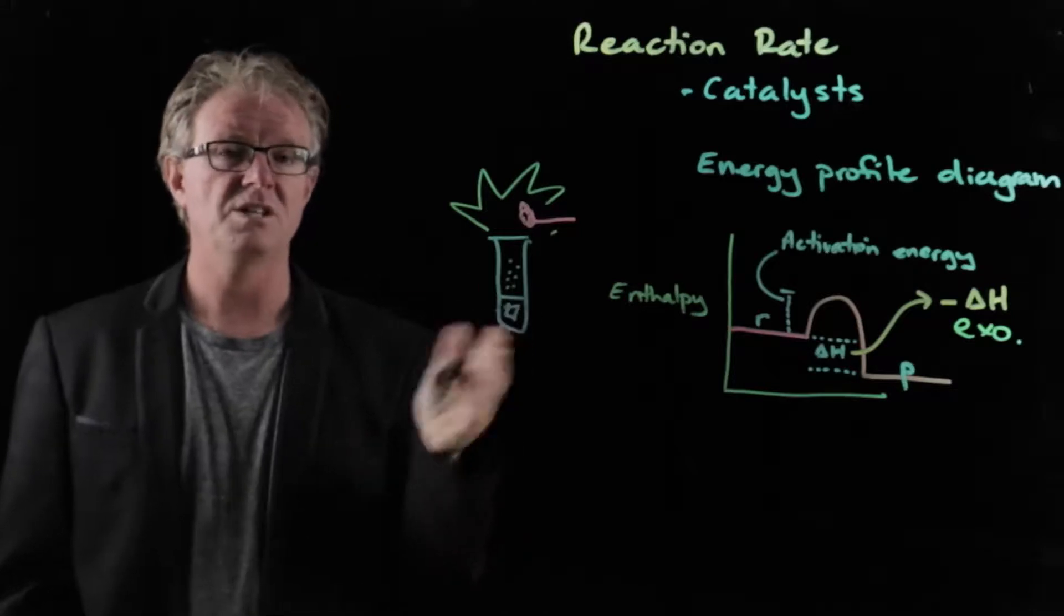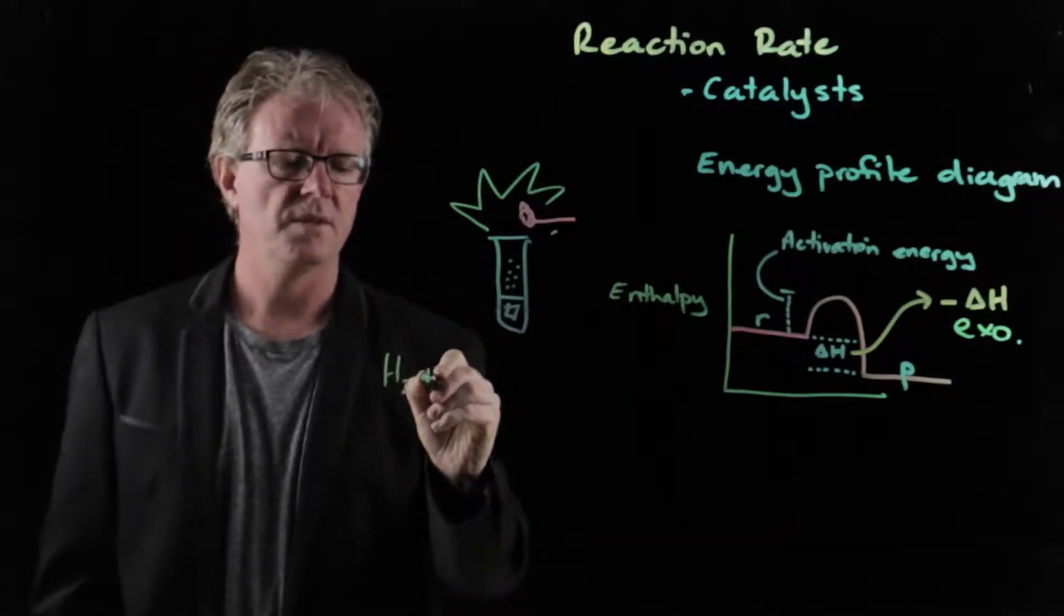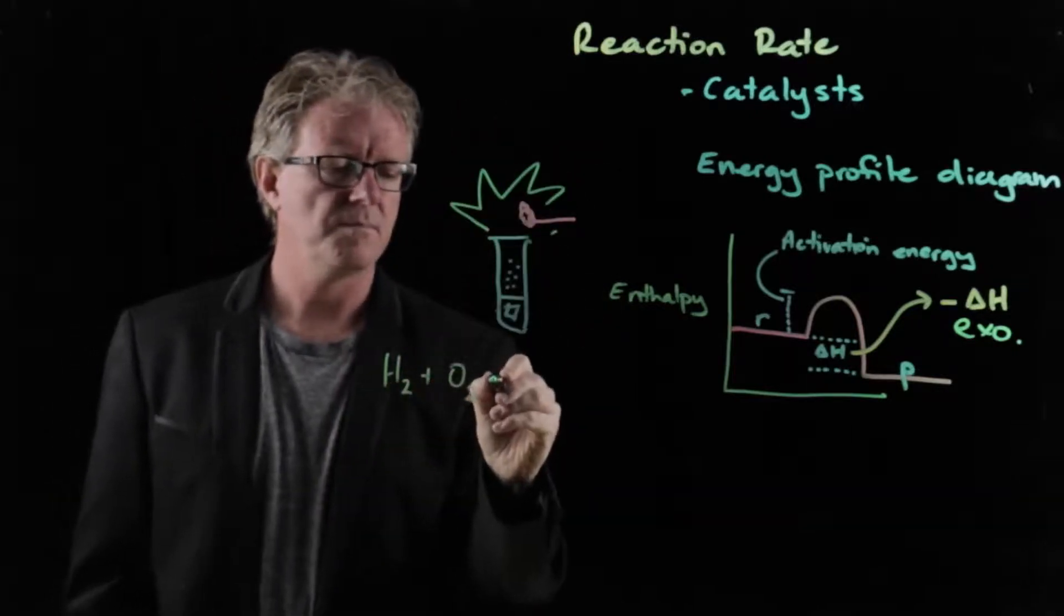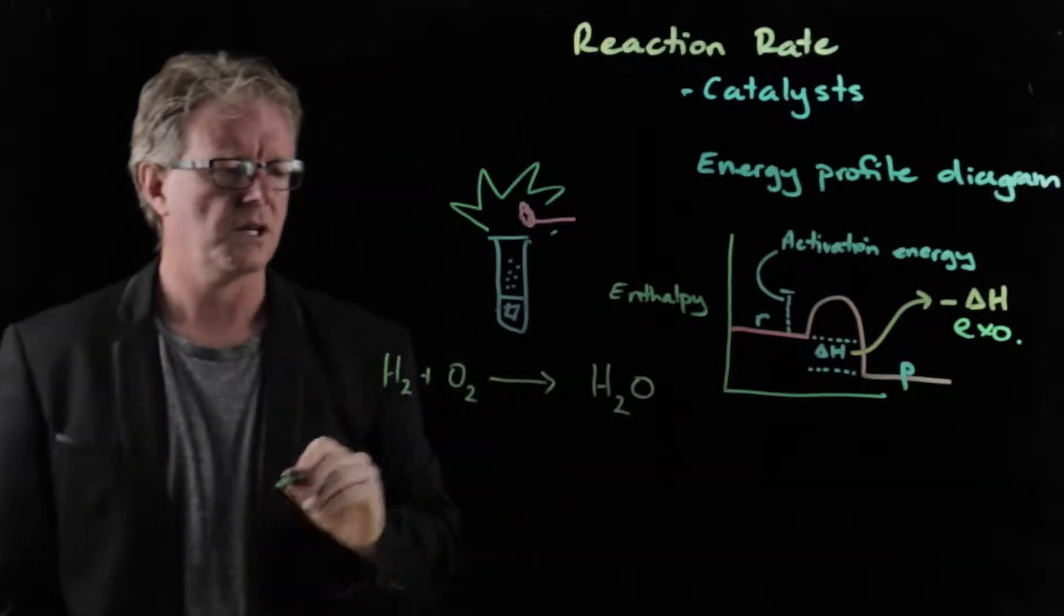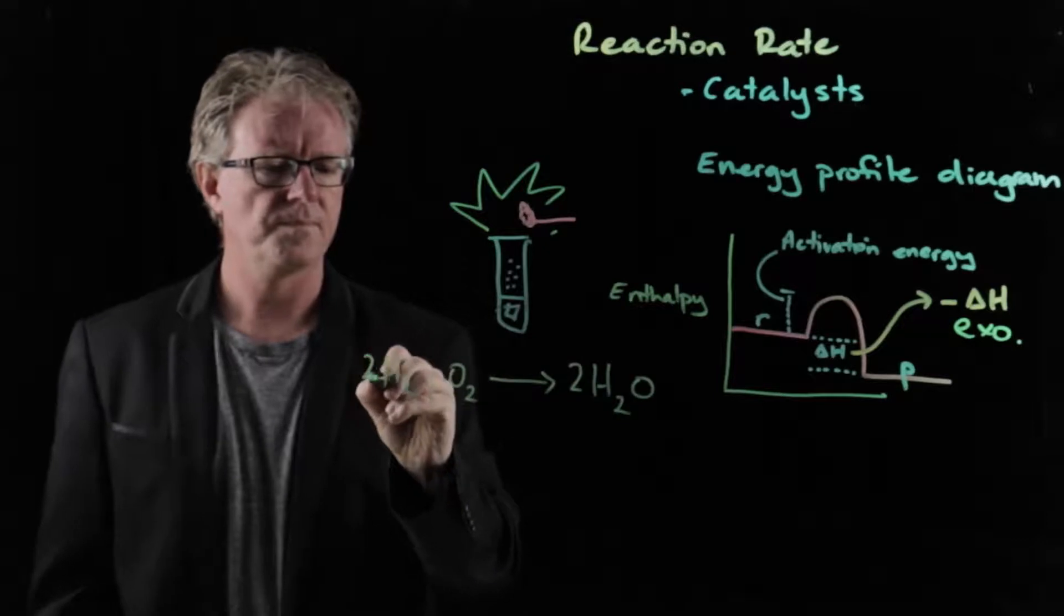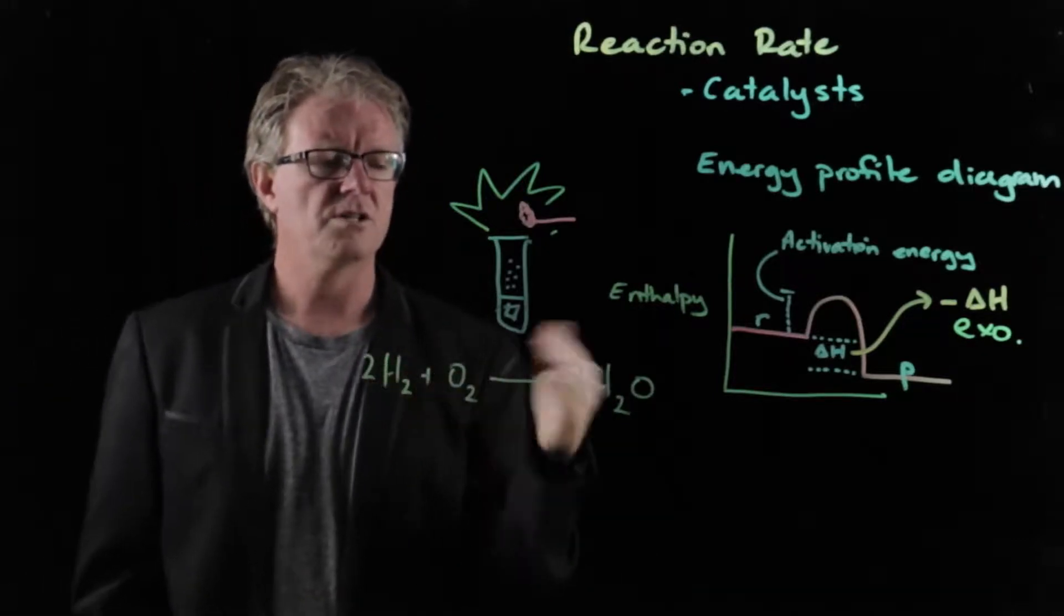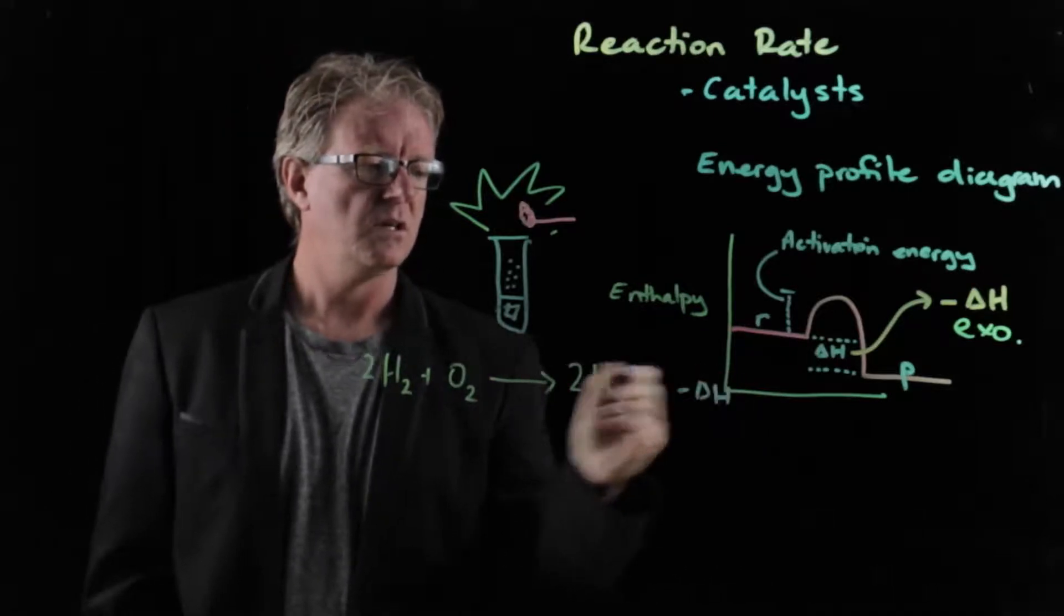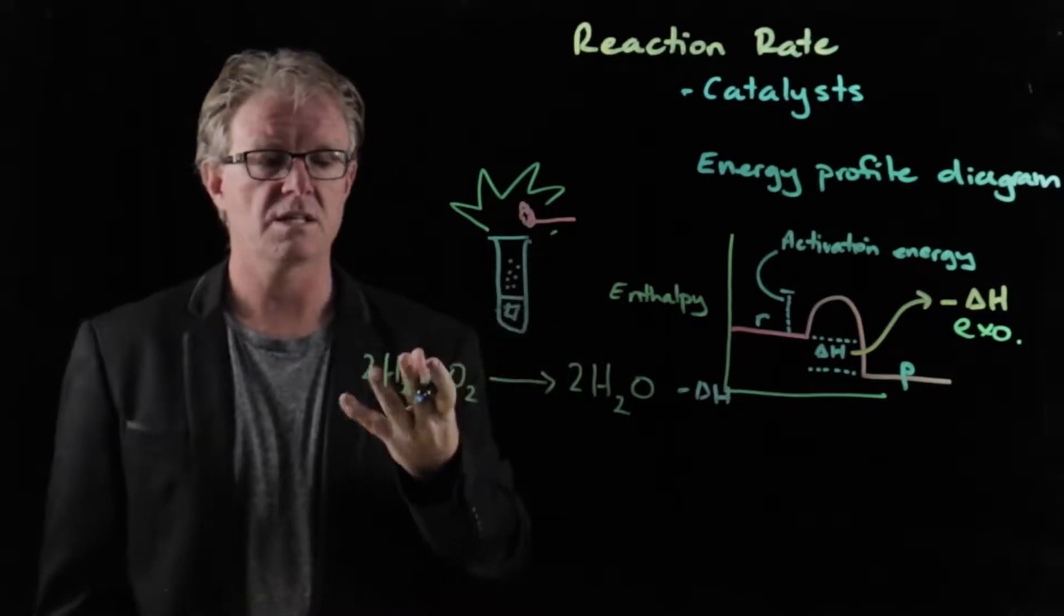And that pop test is really just combining hydrogen and oxygen. So you've got hydrogen gas. You're combining it with oxygen gas in the atmosphere to give you water. So that's the reaction that you're doing there. And that reaction is an exothermic reaction. So delta negative H. It produces heat and light and, of course, sound with the sudden expansion of the gas.